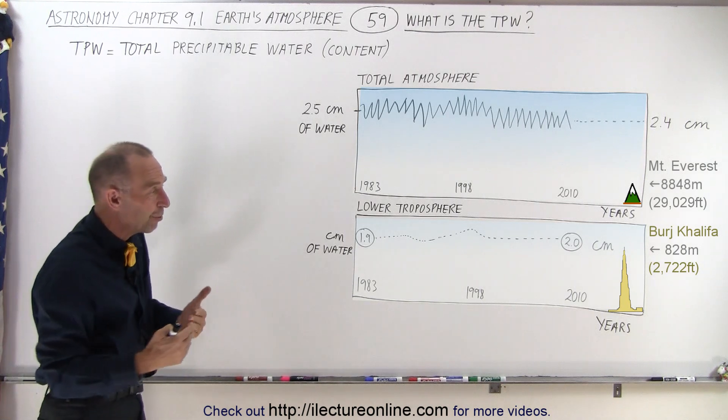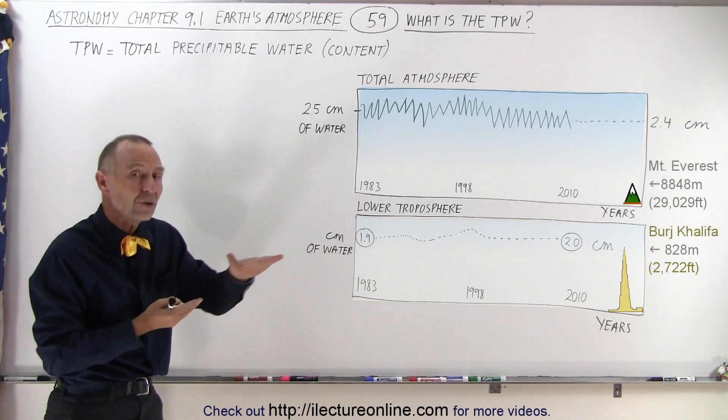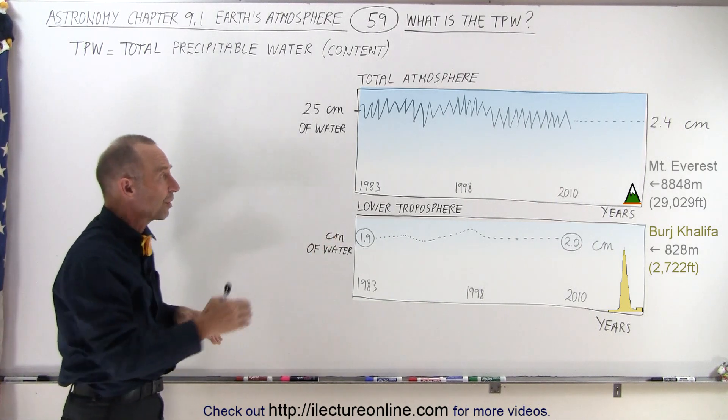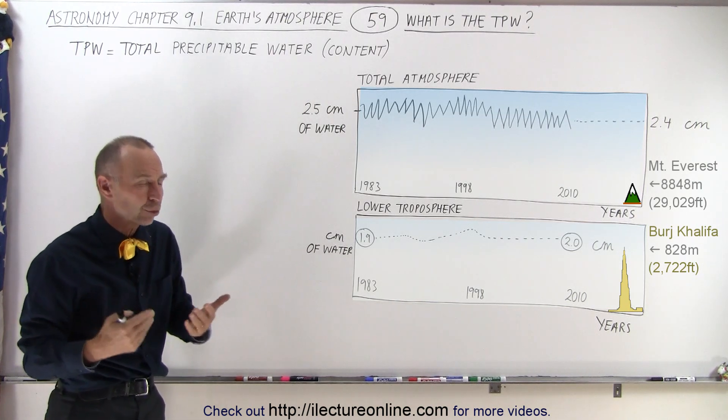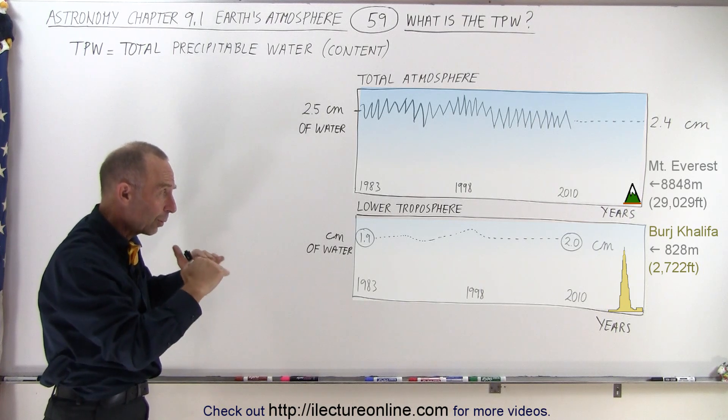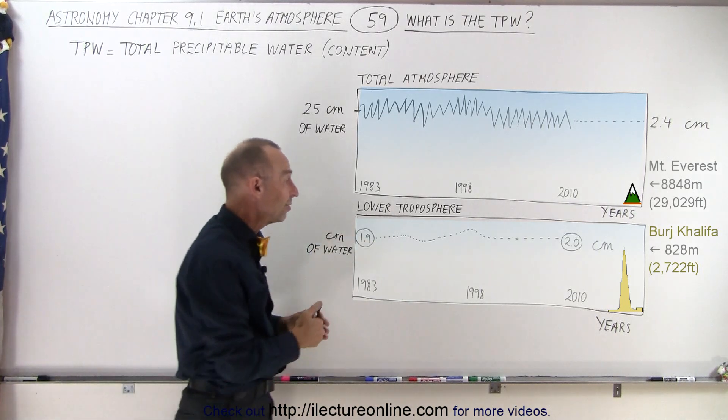So as we had seen before, there seems to be a slight increase in the amount of water in the lower troposphere, while there was a significant decrease in the amount of water in the higher troposphere. Nevertheless, at the lower levels we do see a slight increase.